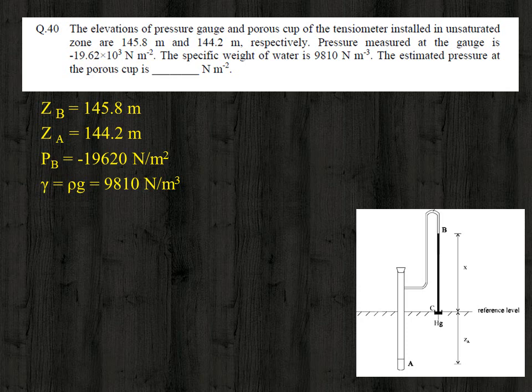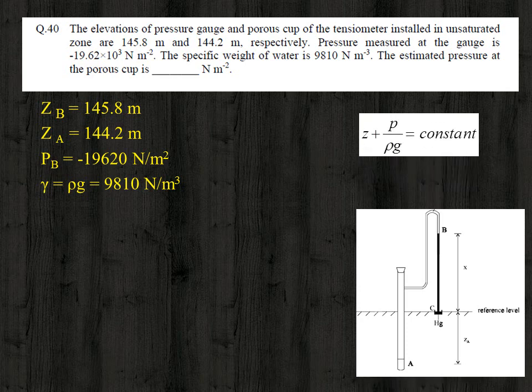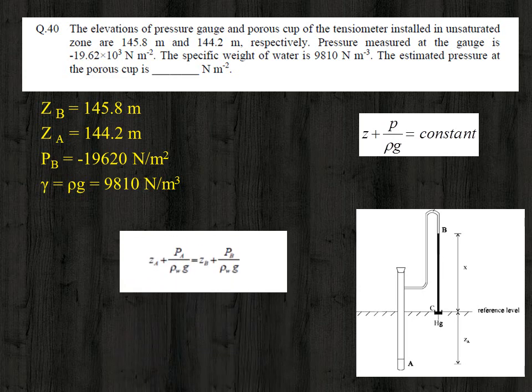For the hydrostatic law of liquids in equilibrium, the hydraulic head at a point is constant, represented by the equation: z + P/(ρg) = constant, where z is the gravitational head and P/(ρg) is the pressure head. For this question we equate: z_A + P_A/(ρg) = z_B + P_B/(ρg).